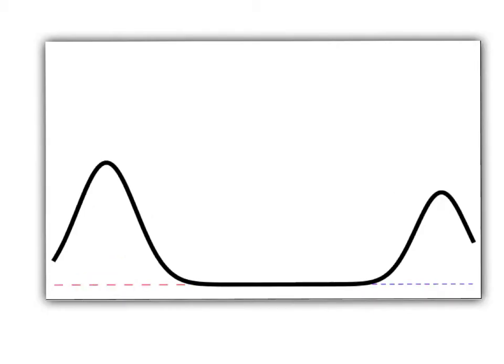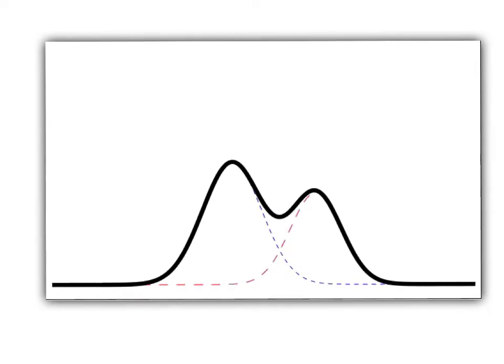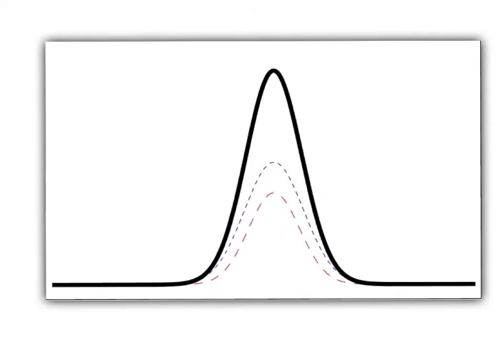Another important thing we can see from this activity is what happens when the two waves are at the same place at the same time. You can see that this particular wave and this particular wave added up to make one big wave right at the middle. So it looks like when two waves come together at the same place at the same time, they add up to make one really big wave. This addition is called the principle of superposition.